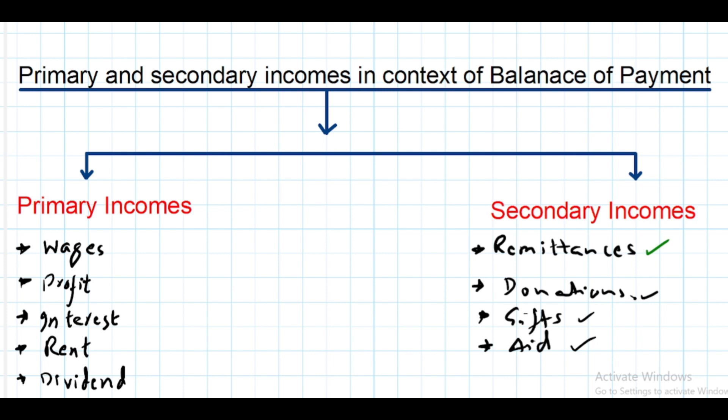does a job there and earns salary income, and sends some amount of money to family and friends living in Pakistan, then it will be remittances - secondary income for Pakistan in the form of remittances. So remittances are always part of secondary income. Keep in mind.